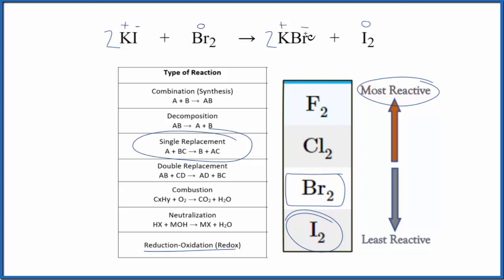The bromine goes from 0 to a negative 1. So it's a free element here. It's 0, goes to negative 1. It's gained electrons. It's reduced. So this is a redox reaction because we've had electrons exchanged as well.